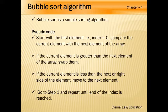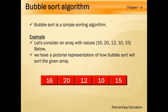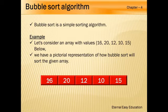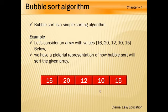We are going to compare the elements one by one and swap. Let's see this through an example. Take an array with the values 16, 20, 12, 10, 15. The procedure is: take the first element and compare with the second. Our target is first to move the largest element to the end, then the next largest to the next-to-last place, and so on.